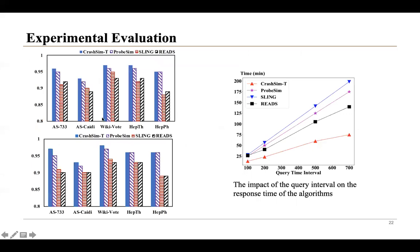These are the results for temporal SimRank queries. Among the competitors, CrashSim-T provides the highest precision because it maintains the error bound at every snapshot and the pruning rules preserve the error bound. The last experiment shows the impact of query interval on response time. CrashSim-T also has the fastest response time across the entire query interval, since it has the lowest time complexity on a single snapshot and reduces unnecessary computation over adjacent snapshots by employing the pruning rules.